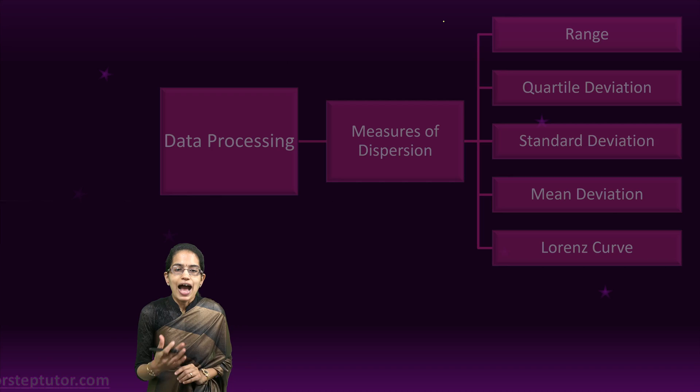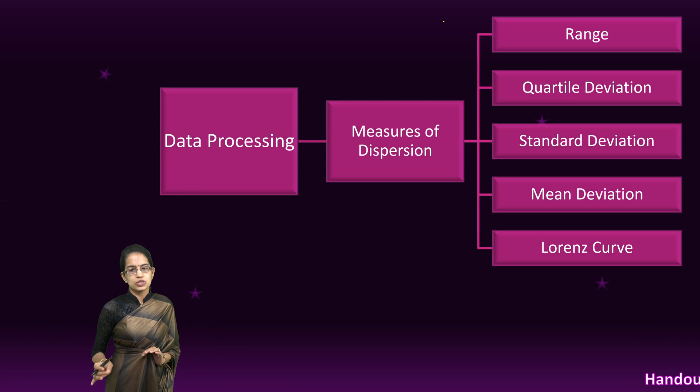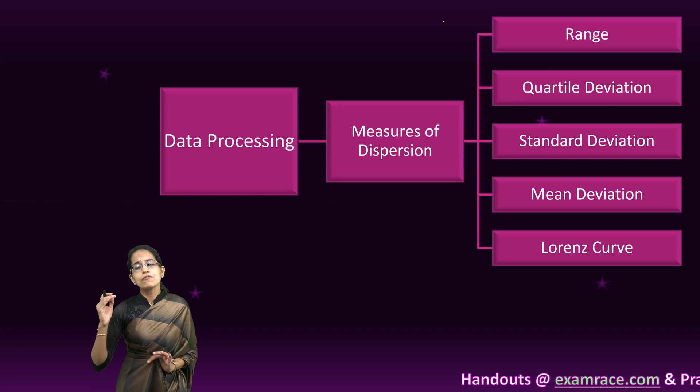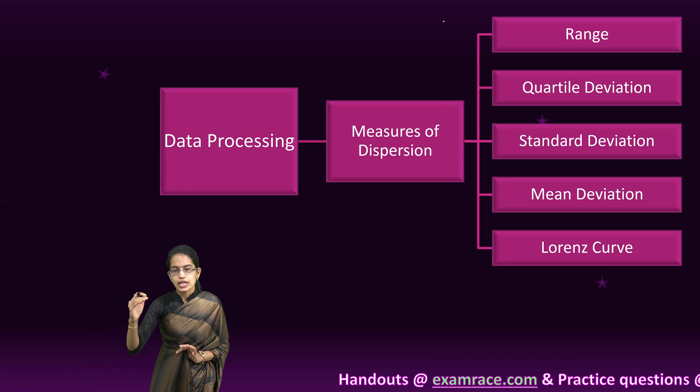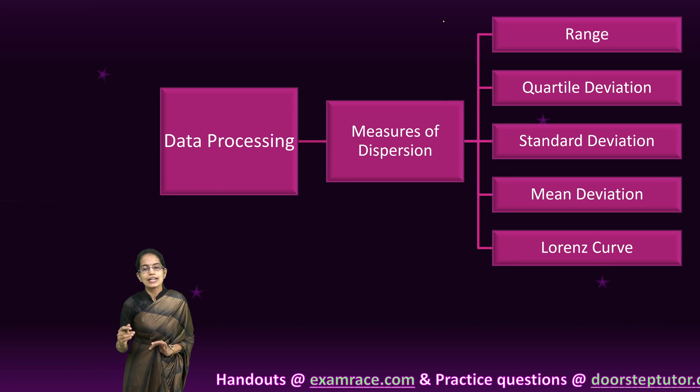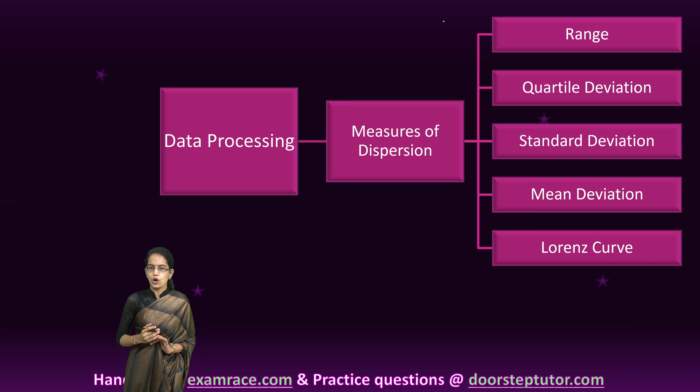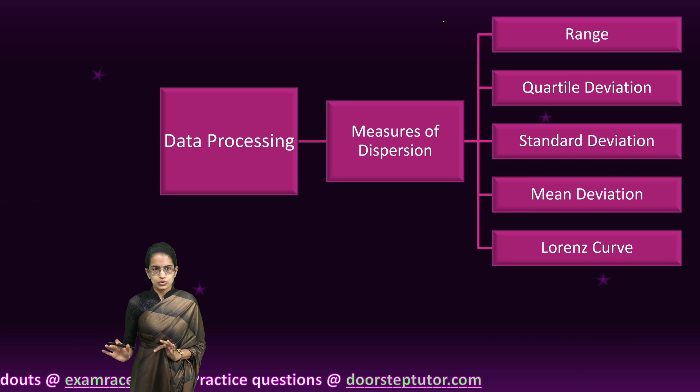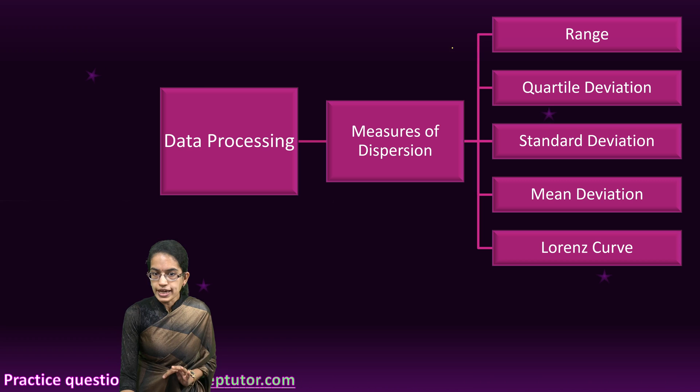This method of dispersion can be understood under five heads: range, quartile deviation, standard deviation, mean deviation, and Lorenz curve. Most commonly used among all of the methods of dispersion is range, which we have already discussed.